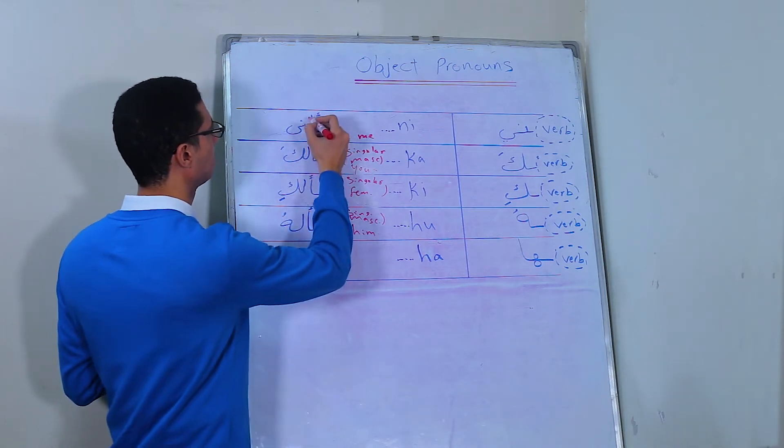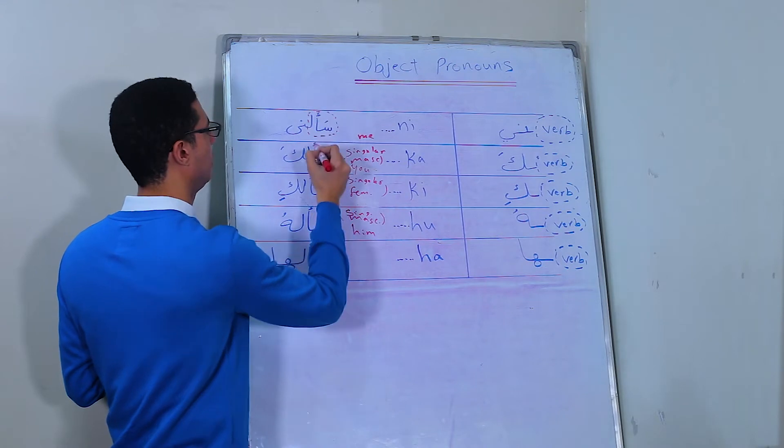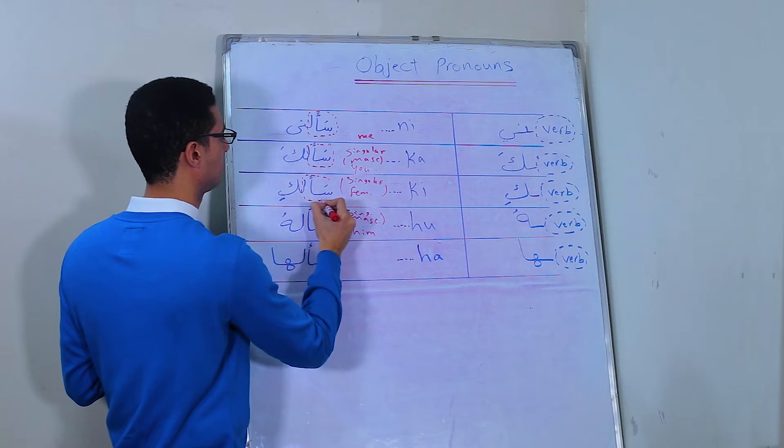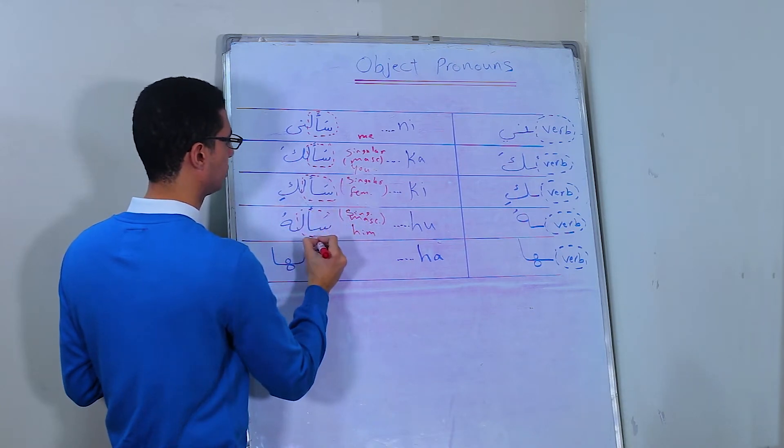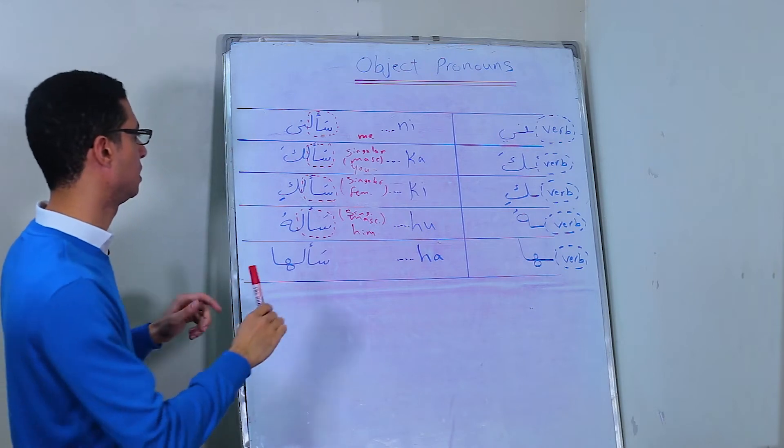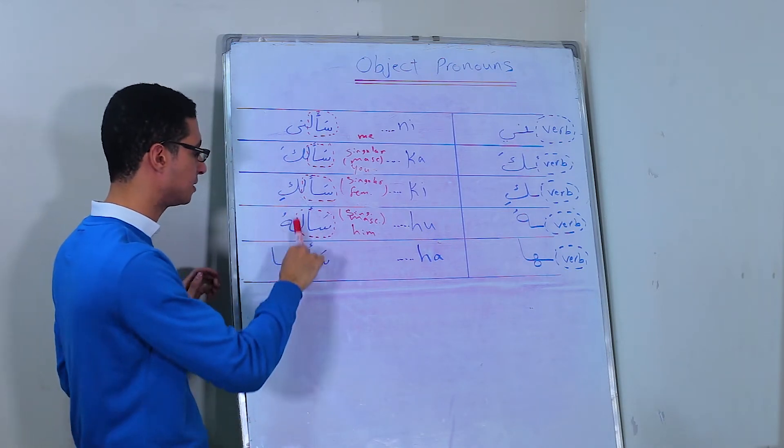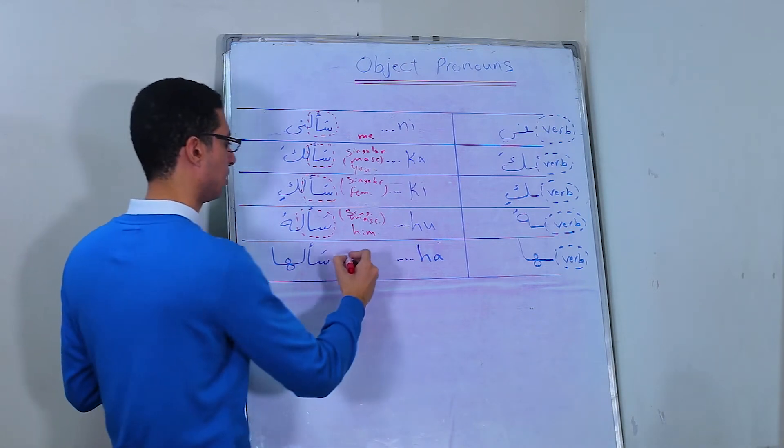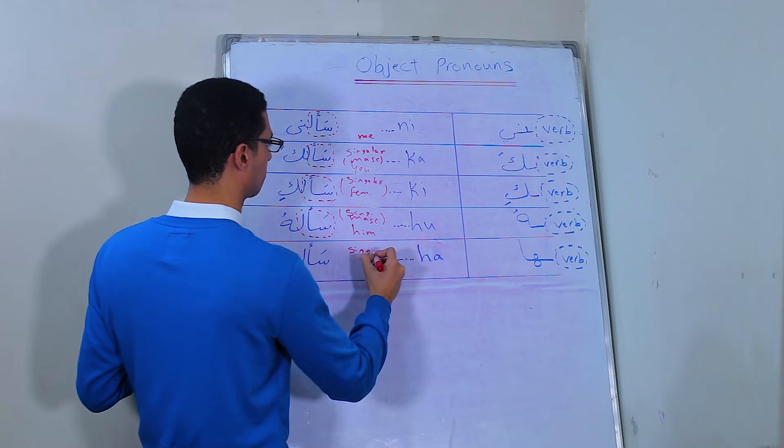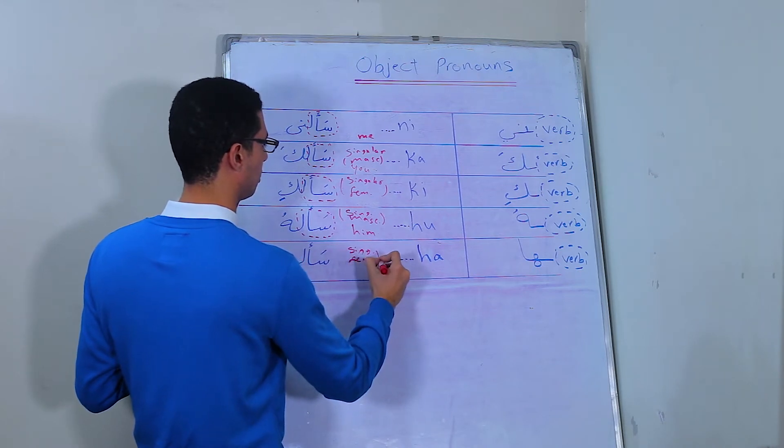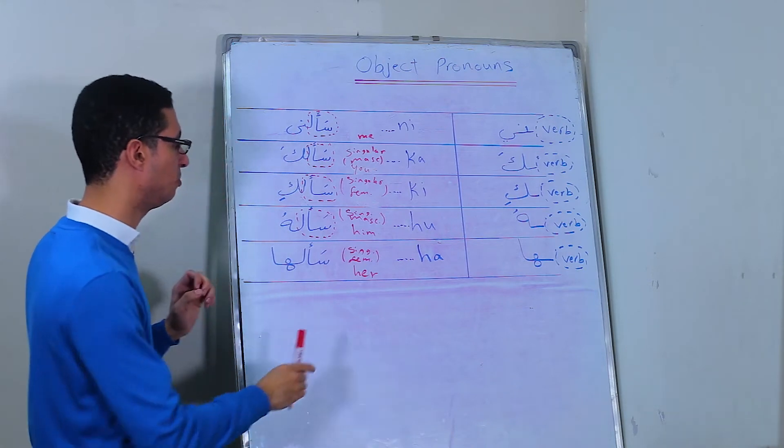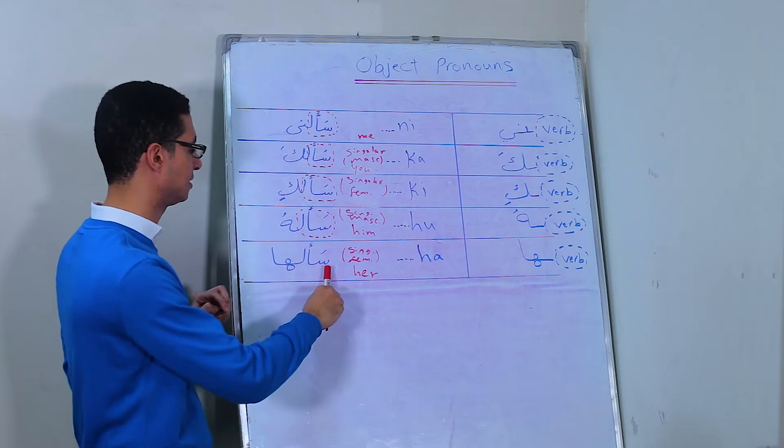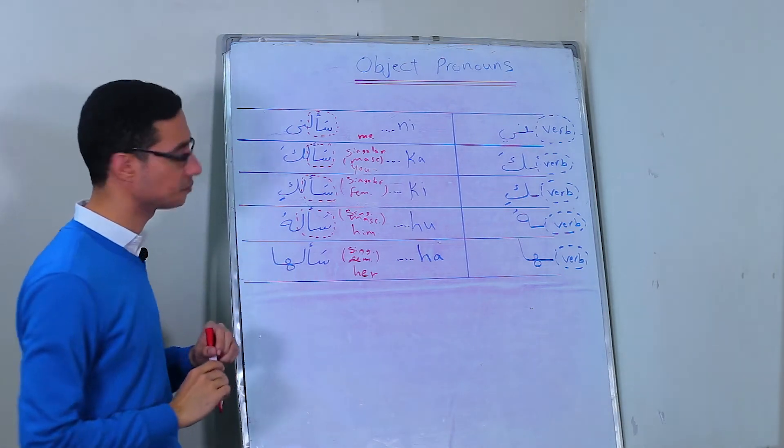Here is the verb, and here is the verb, and here is the verb. Same here. So we just add different attachments. Here, he asked him. He asked her. This is singular feminine. It will be ها. سألها.